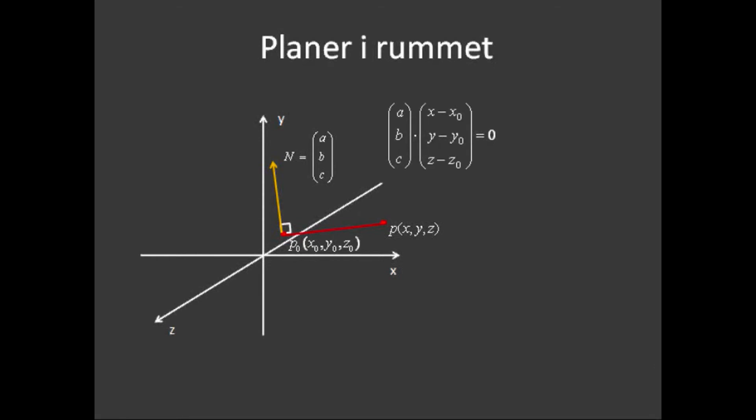Med andre ord, punkter, hvis koordinater passer ind i prikproduktet, udgør altså en planflade, som vi ser her. Man kan også vende den om og sige, at alle de her punkters koordinater, som udgør den grønne flade, passer ind i ligningen her.